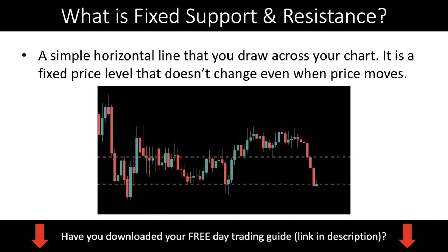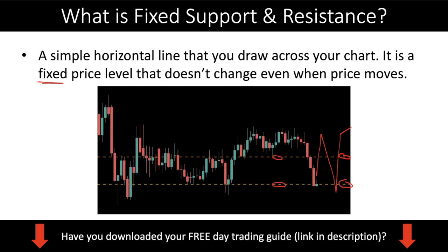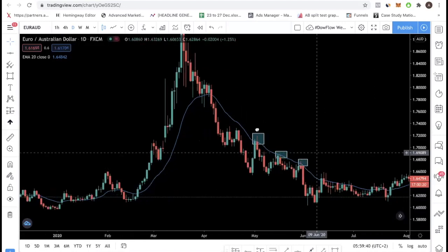So what is a fixed support and resistance level? This is very straightforward — it's basically a simple horizontal line. You have to look at the charts and identify turning points. A fixed support and resistance level is a fixed price level. As the name suggests, it is fixed, meaning it doesn't change. The market can move up, down, or anywhere — these levels will not change. We have more information on how to draw these levels in the free day trading guide.